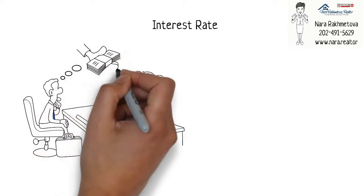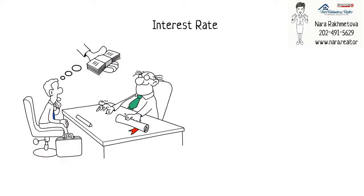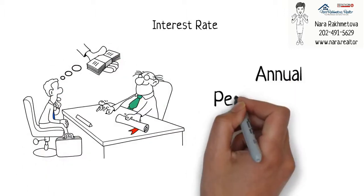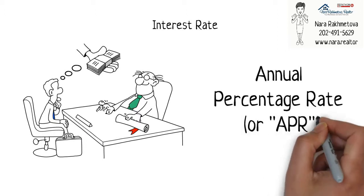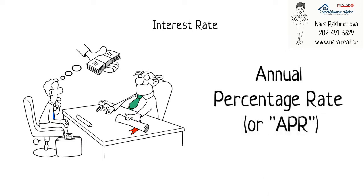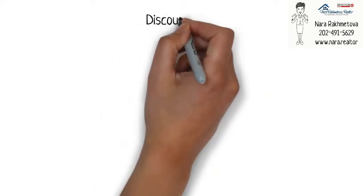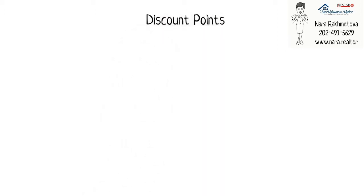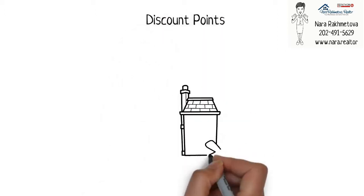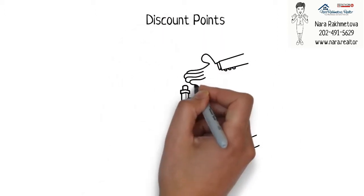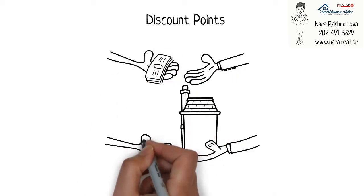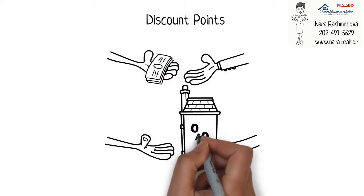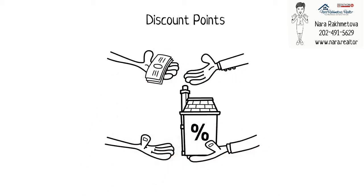Interest rates are typically quoted on an annual basis, known as Annual Percentage Rate, or APR. Discount Points: Discount points are used to buy down the interest rate, either temporarily or permanently.